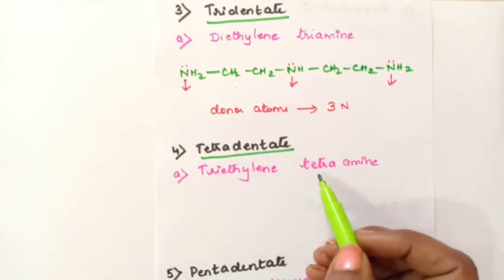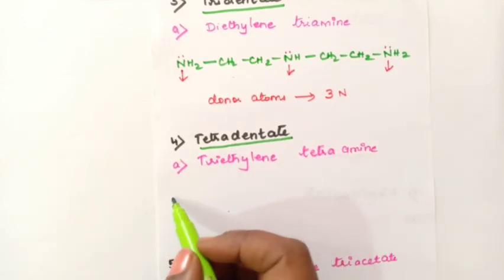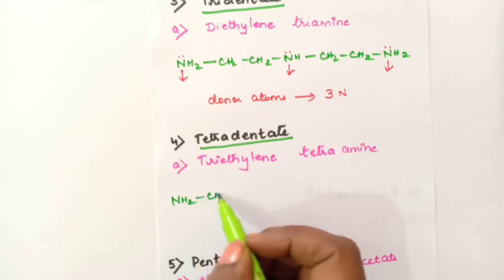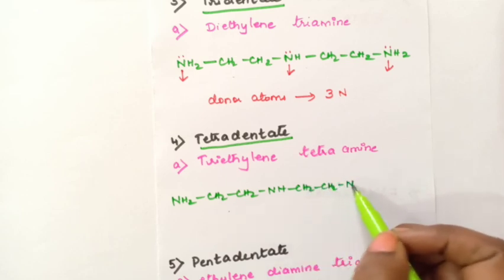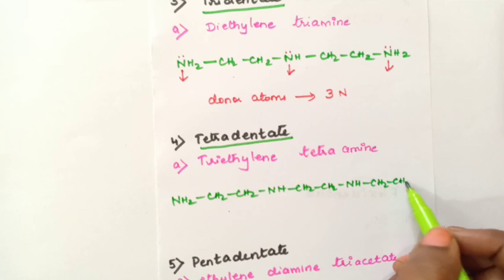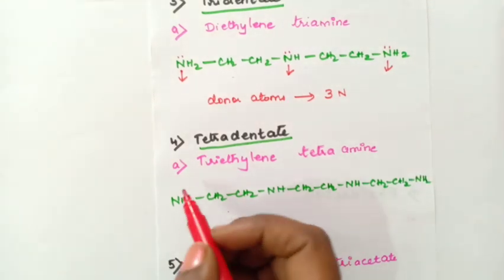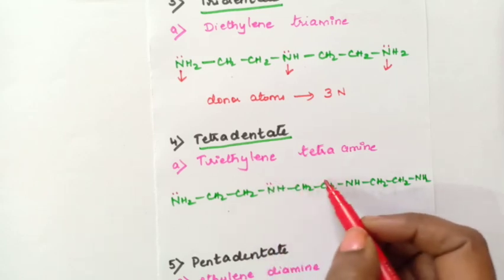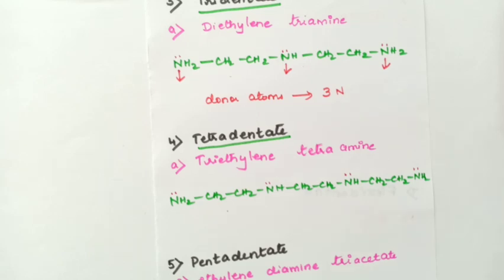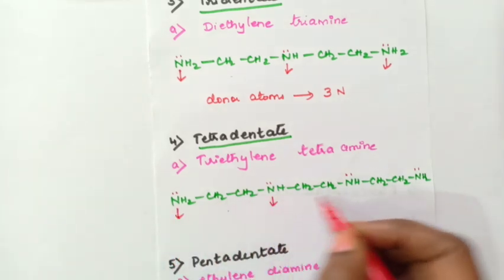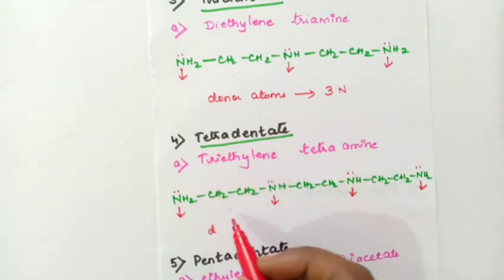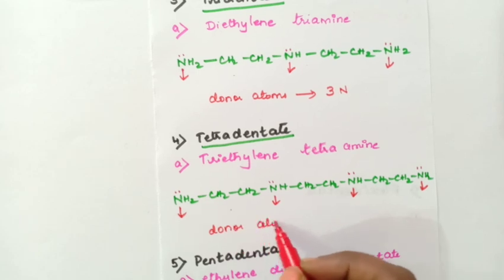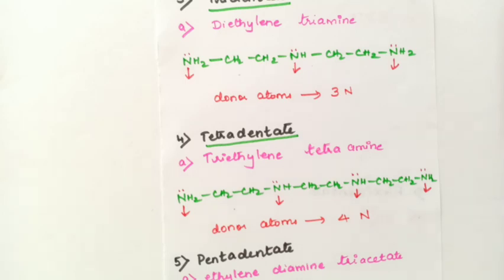Next example is for tetradentate ligand: triethylene tetraamine. The formula is NH2-CH2-CH2-NH-CH2-NH-CH2-CH2-NH-CH2-CH2-NH2. Nitrogen has lone pair of electrons at each nitrogen center. So one coordinate bond, two coordinate bonds, three and four — four coordinate bonds total formed through nitrogen. Therefore it is called as tetradentate ligand. Donor atoms are four nitrogen atoms.